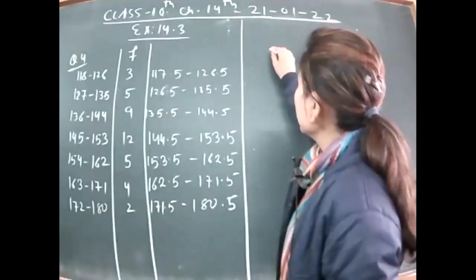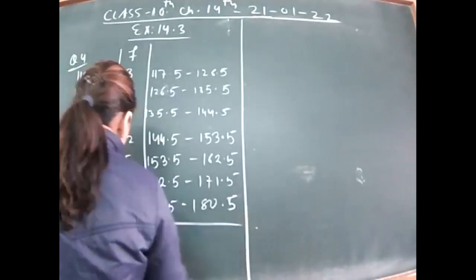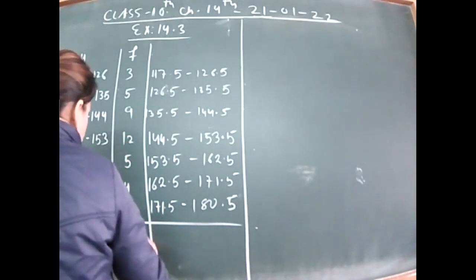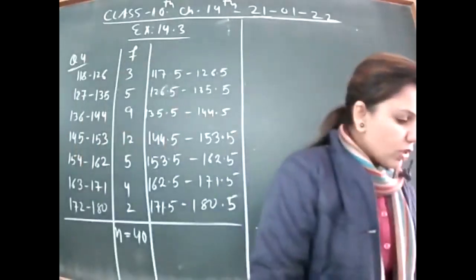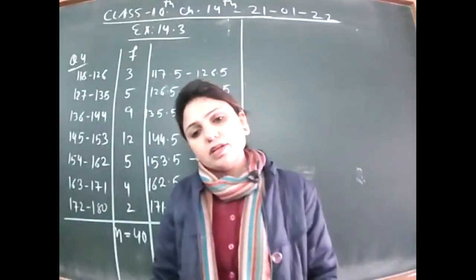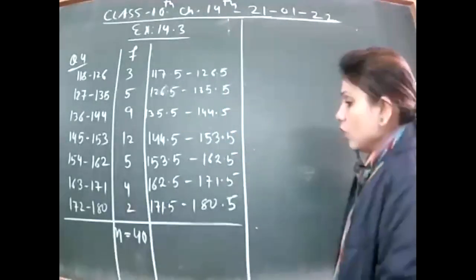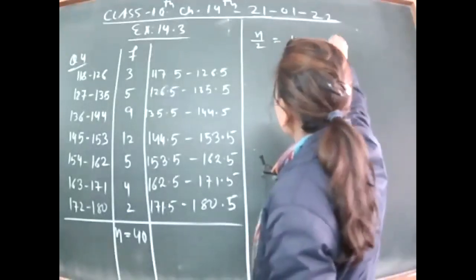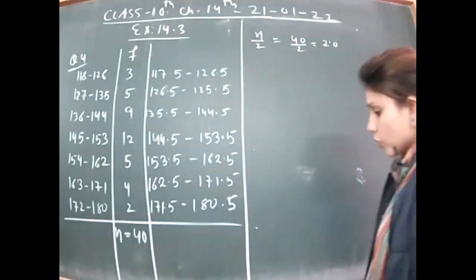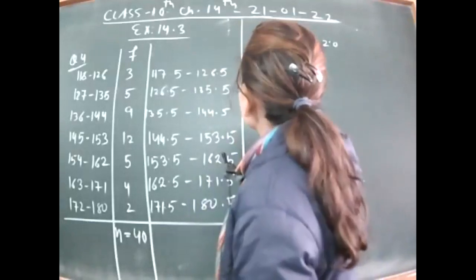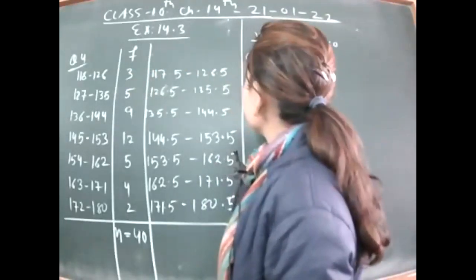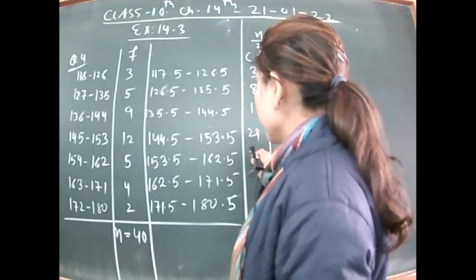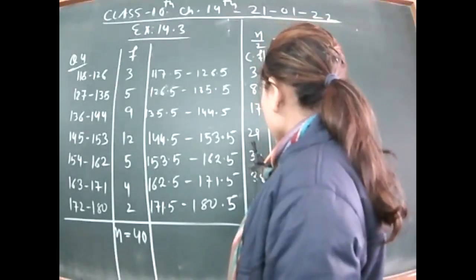First, find the total frequency: n = 40. So n divided by 2 equals 20. For median we also need a cumulative frequency column. The cumulative frequencies are: 3, 8, 17, 29, 34, 38, and 40. The last cumulative frequency coincides with the total, confirming it is correct.